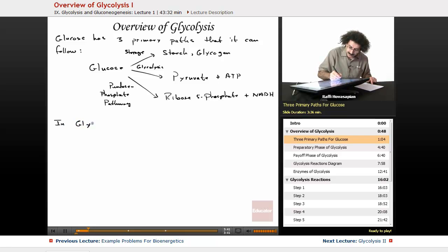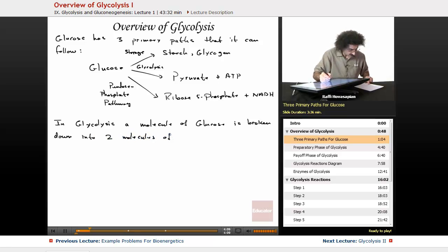So now, in glycolysis, a molecule of glucose is broken down into two molecules of pyruvate in 10 enzyme-catalyzed steps. It's amazing. It's still just, it amazes me. Of course, we know that every reaction in the body is catalyzed by an enzyme.